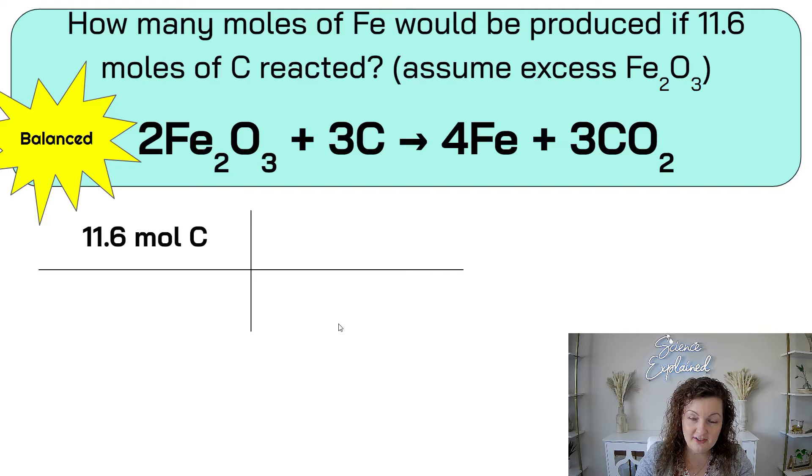It says, how many moles of Fe would be produced if 11.6 moles of carbon reacted? We're assuming an excess of Fe2O3, and this is the same equation still. So we still know it's balanced, so we can move on to our bridge. Go ahead and pause this and see if you can get this one correct.